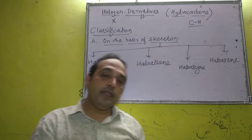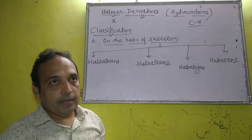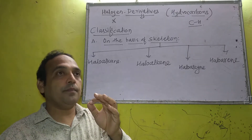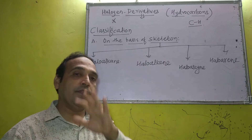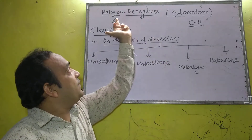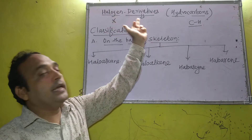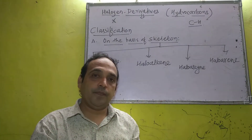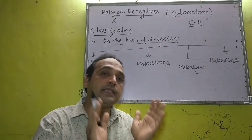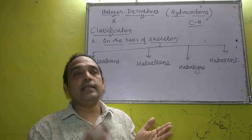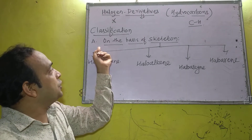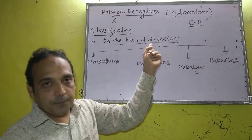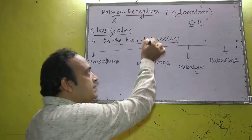In this topic, some important concepts we are going to discuss. The first part is classification of halogen derivatives. Classification is given in different manners — on different bases or in different ways. The first classification is on the basis of skeleton.